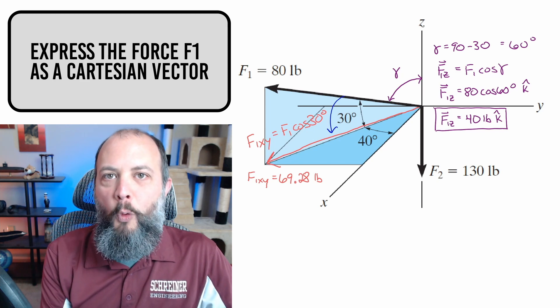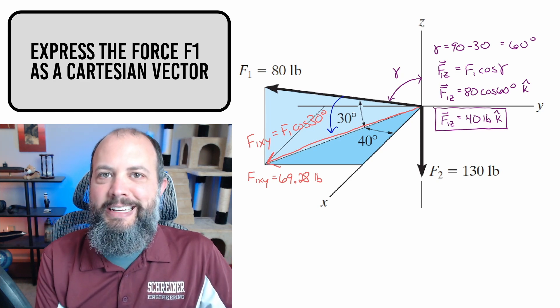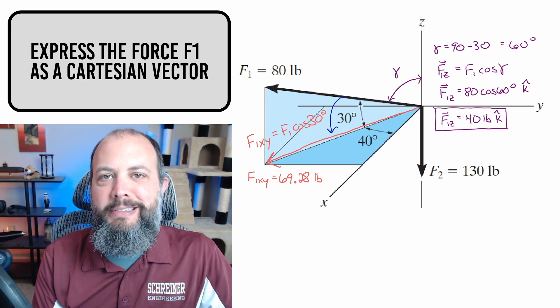The next step is to take the 80 pound diagonal vector and project it down into the X, Y plane onto this red diagonal line. You can do that using the 30 degree angle that's given. And I'm calling this vector F1 X, Y, meaning that it is the projection of vector F1 in the X, Y plane.